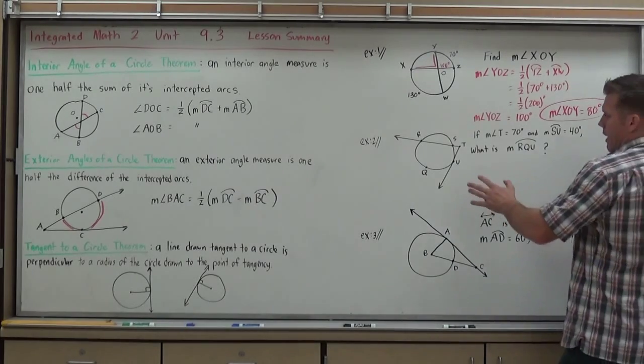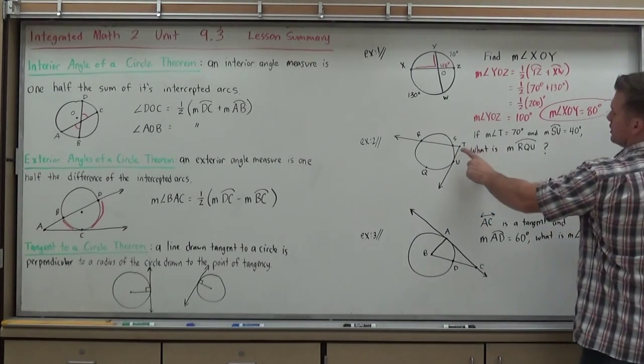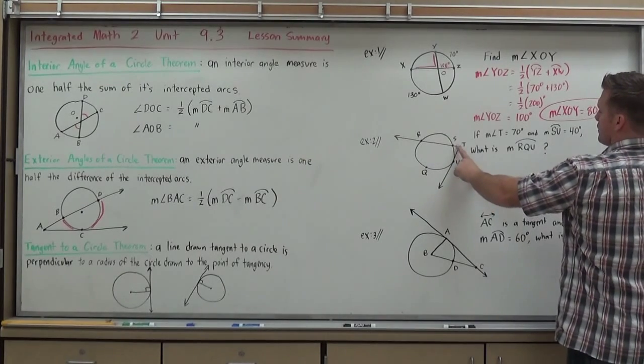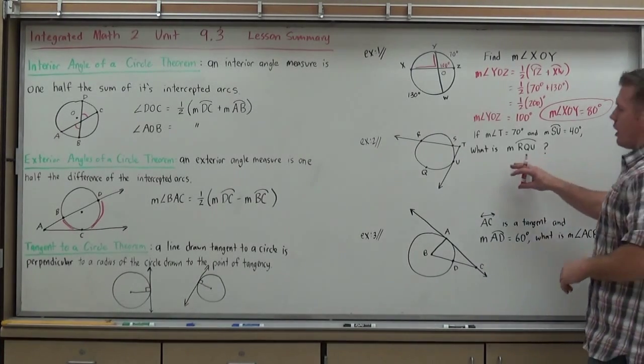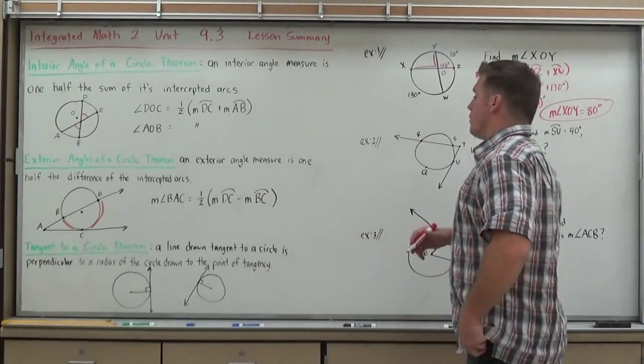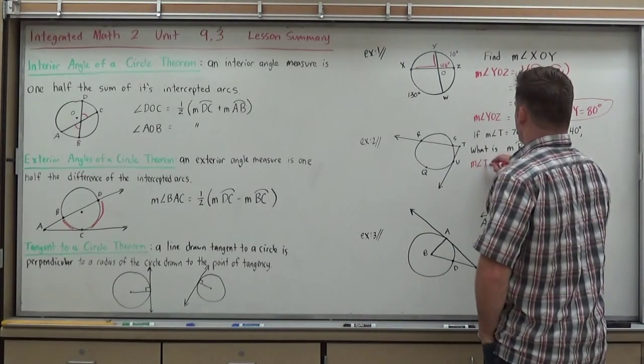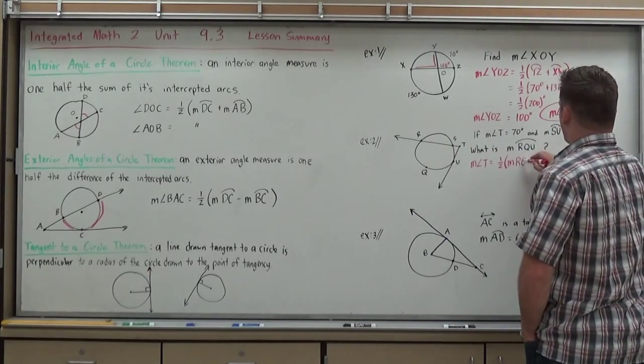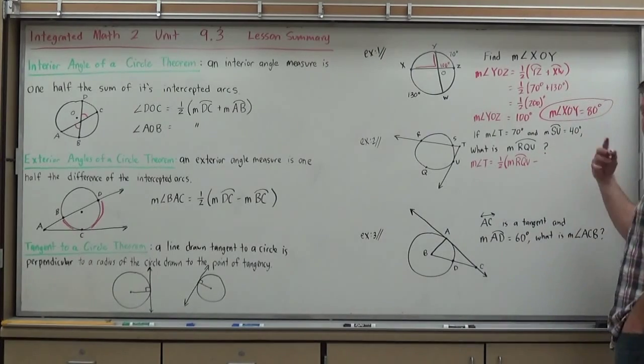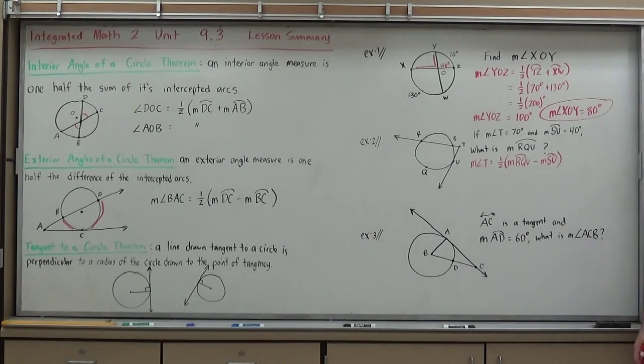Example two. Now, I have an exterior angle being formed on the outside. The problem states, if that exterior angle on the outside, measure of angle T here, is 70 degrees, and this arc SU is 40 degrees, what is the measure of arc RQU? Now, since I have an exterior angle, I'm going to want to start by setting up my exterior angle theorem, because that's likely going to be my only path to success. So, let's write it. The measure of angle T equals one-half the measure of the larger arc it forms, arc RQU minus, remember, it's the difference for exterior angles, arc SU. So, I at least have a formula to work with, a theorem to work with, and let's see what might come about with it.